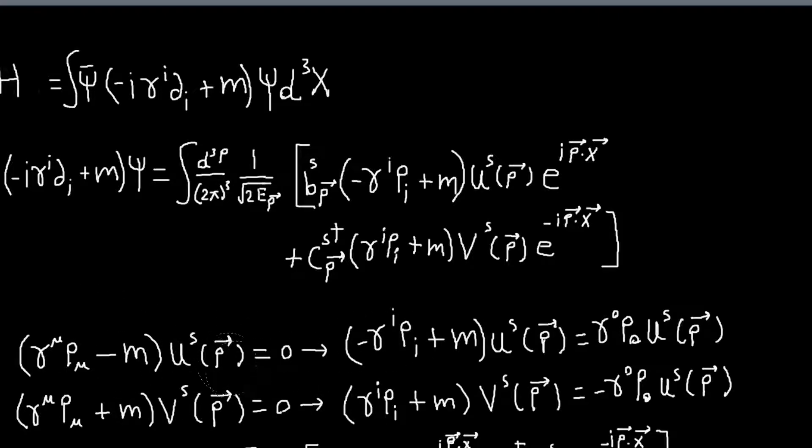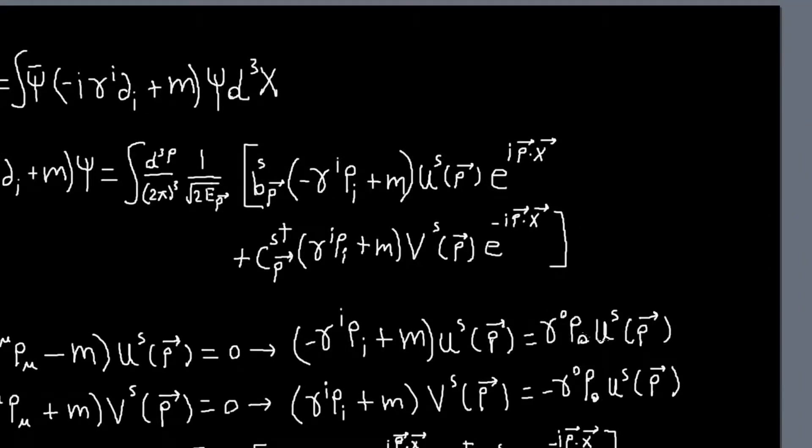So basically, we can use this, we can split this sum up into the time and space parts, and then basically solve for this operator, and just write it in terms of the time parts. So that'll reduce this expression a lot, and similarly for this term.